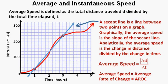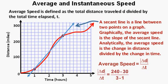For this secant line, the change in distance is 240 miles minus 30 over 3 hours minus 1 hour. Which equals 105 miles per hour.